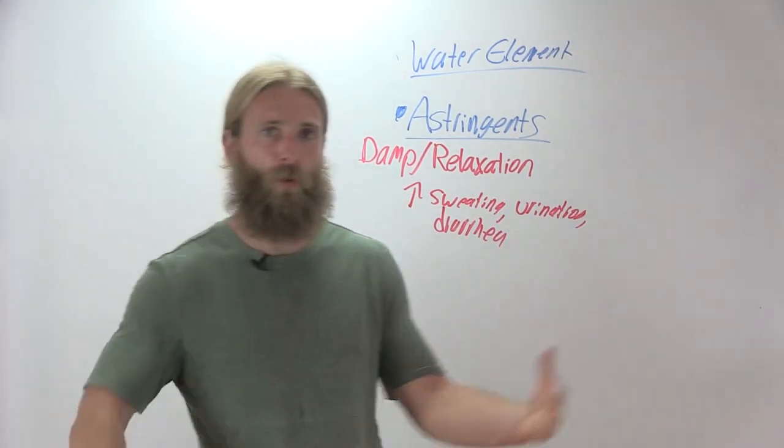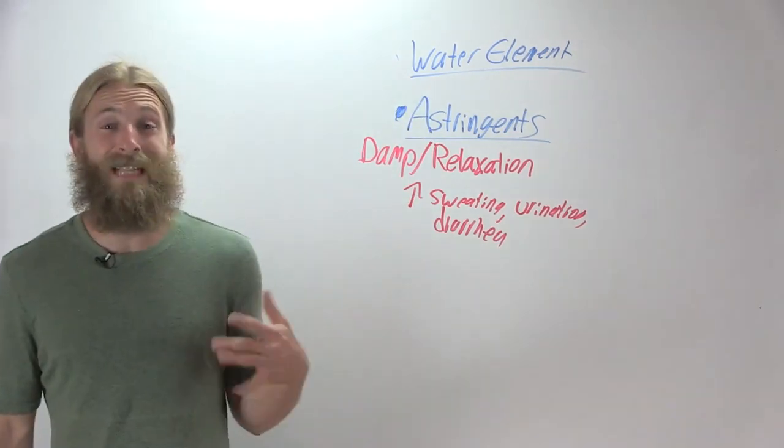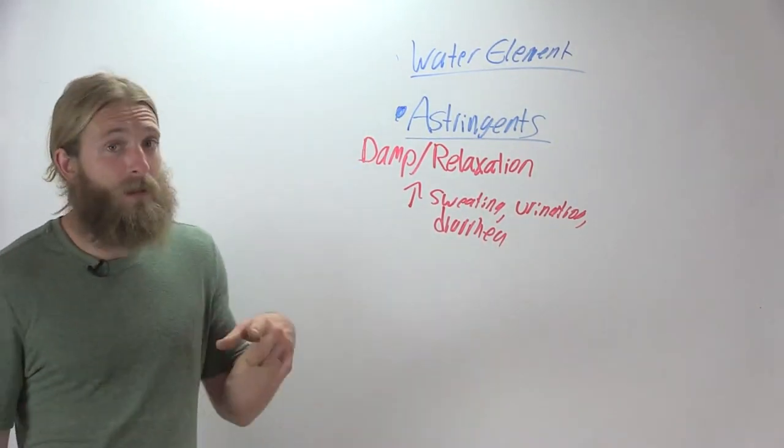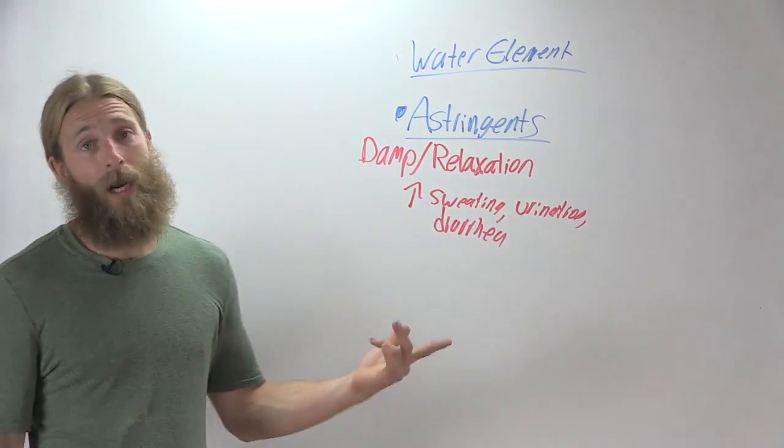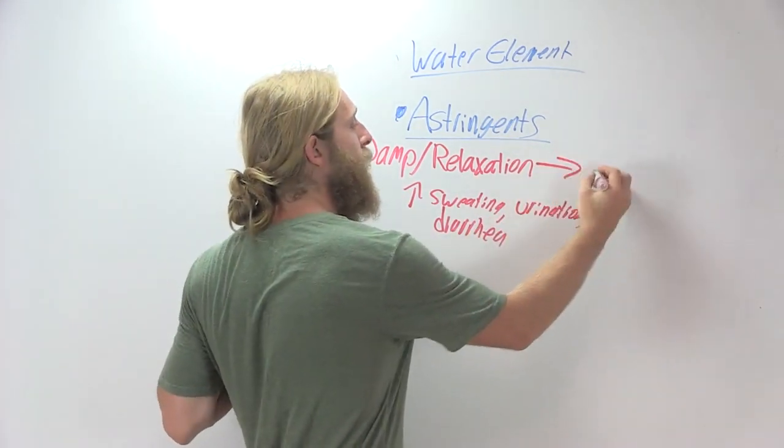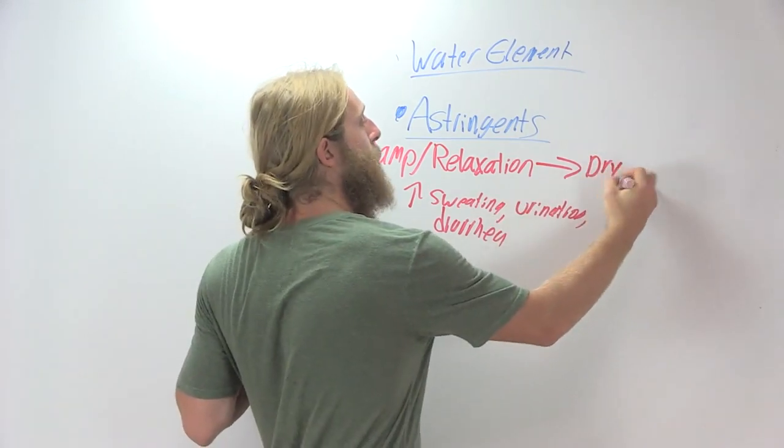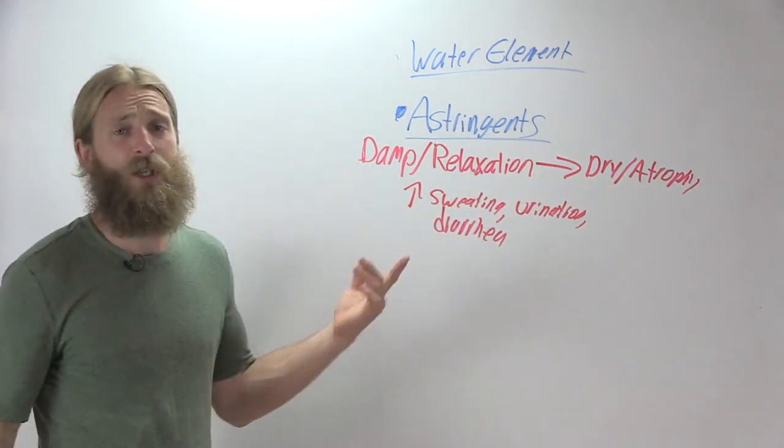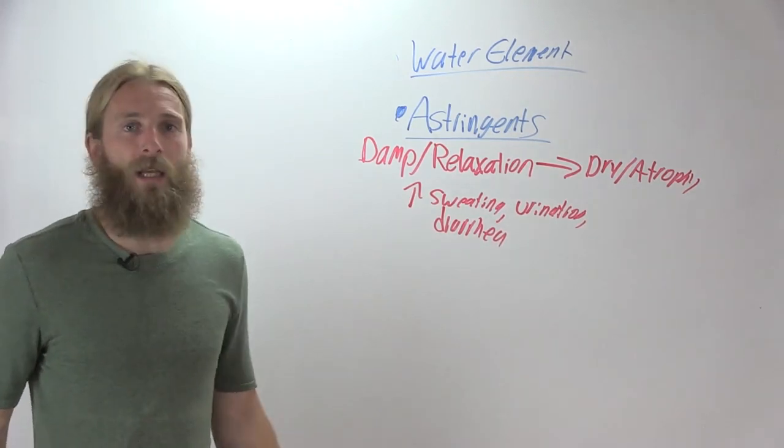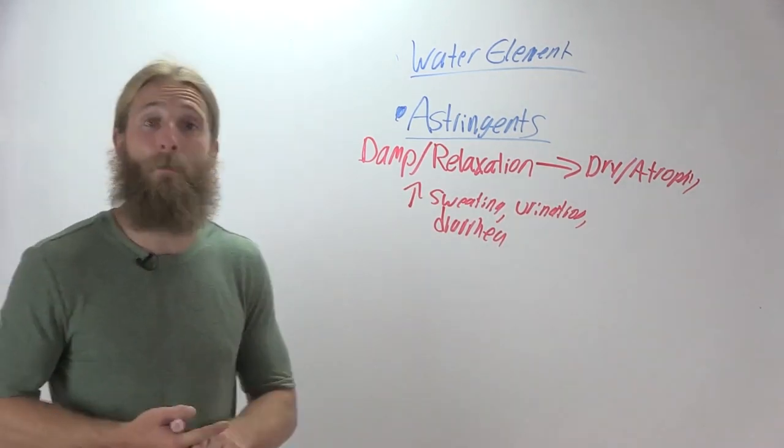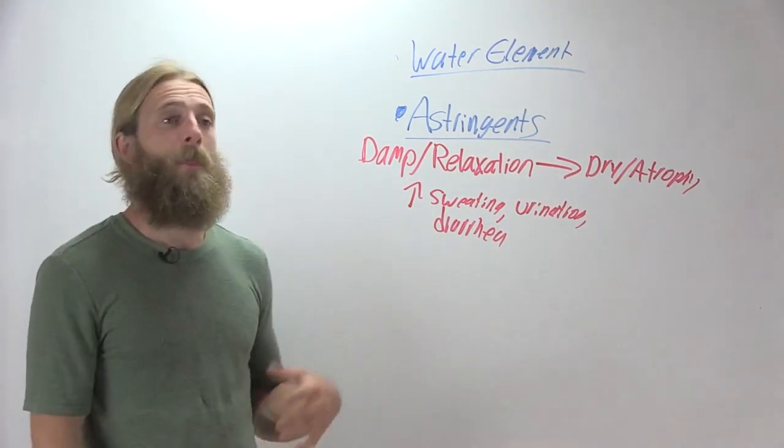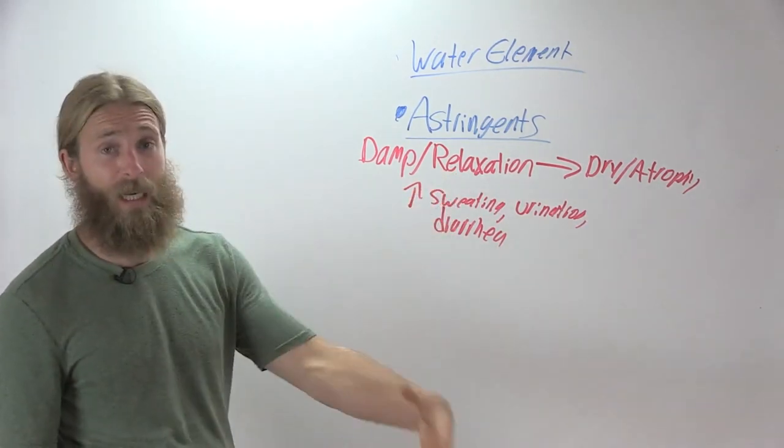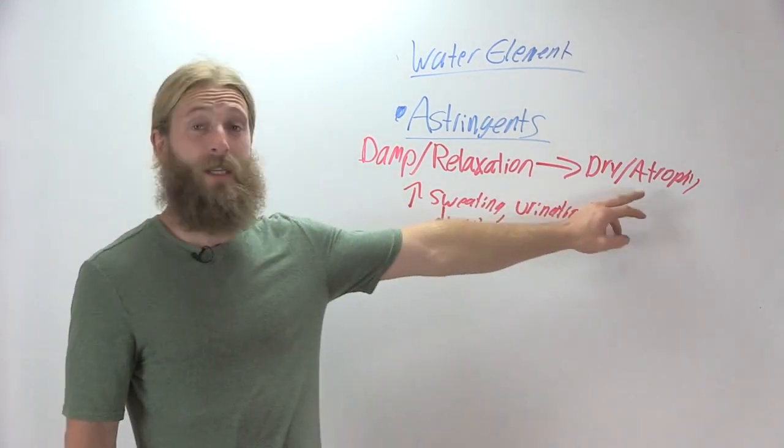Say someone's sweating all the time, peeing all the time, and has diarrhea all the time. They've got the worst of the worst of this tissue state. On the surface, they look really wet. You're like oh geez, all this fluid is just pouring out of them. But where's that fluid going? Out of the body. Those fluids are leaving the body, which ultimately in the long term is going to lead to dryness. So it is common for long-term damp relaxation if the fluids are leaving the body to turn into dry atrophy. Now there are ways this tissue state can be present but the fluids don't leave the body like with hemorrhoids or varicose veins or prolapsed tissues, prolapsed organs. That's still the relaxation tissue state, but they're not losing fluids. But if this tissue state's present and they're leaking a bunch of fluids out, ultimately they're going to get dry.